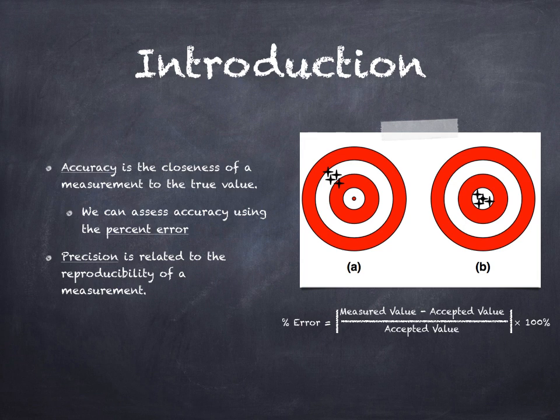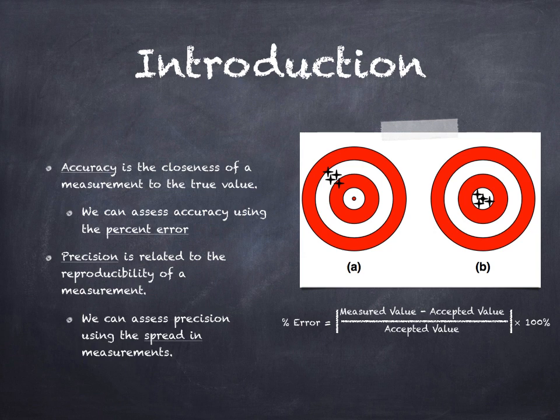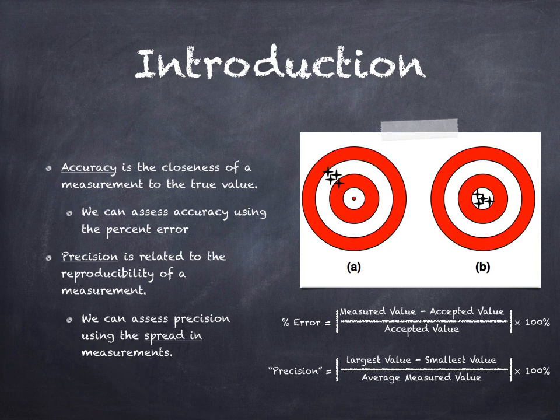When making measurements in lab, we assess precision by looking at the spread in experimental values. We'll calculate precision by subtracting the smallest value from the largest, dividing by the average of measurements, and multiplying by 100.